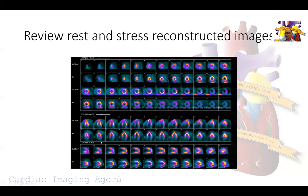These are the same images after applying attenuation correction. You can see the attenuation correction helped a little bit in resolving some of these so-called perfusion defects or decreased counts at the base of the heart, preserving the counts at the apex. However we still have a perfusion defect involving the septum, visible in the horizontal long axis, the short axis, and the vertical axis towards the inferior septum.